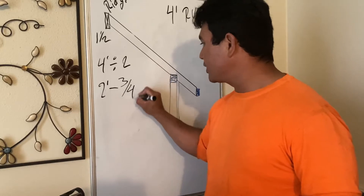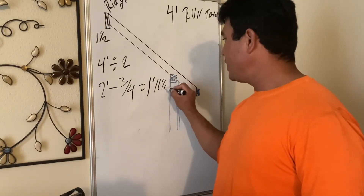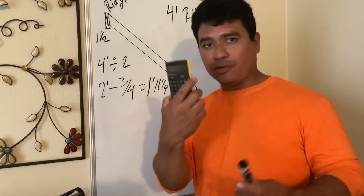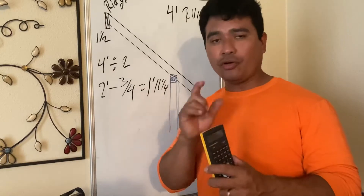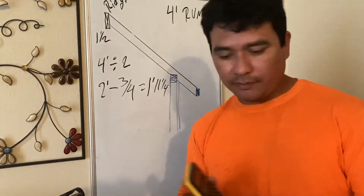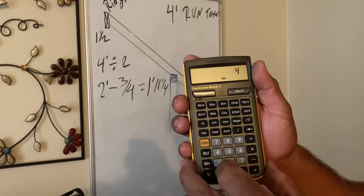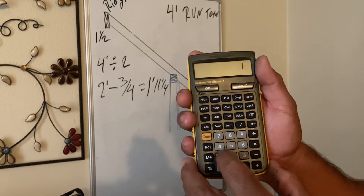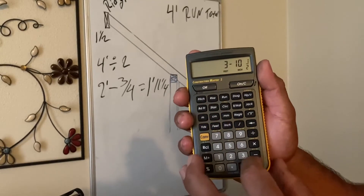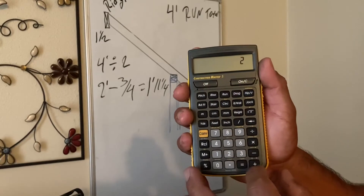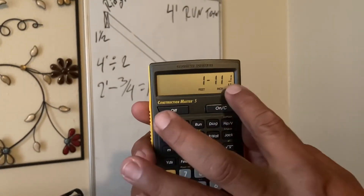That gives us one foot eleven and a quarter. Let me show you on the calculator. First method: four feet, minus one inch and a half, then divide by two — and this is the total of our run: one foot eleven and a quarter.